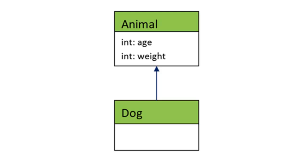The child class dog inherits attributes like age and weight from the parent class, which is animal. Inheritance allows the child class to inherit the attributes and behaviors of its parent.